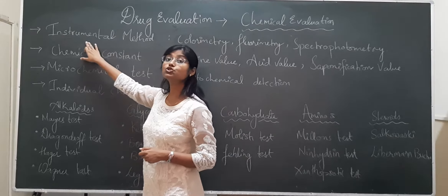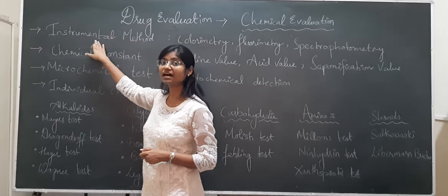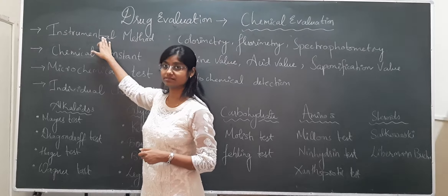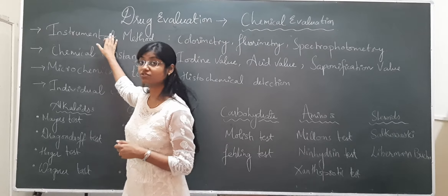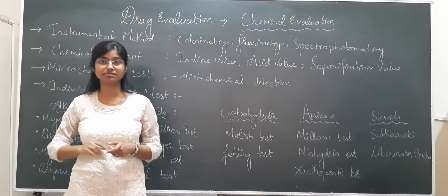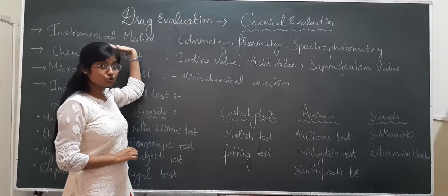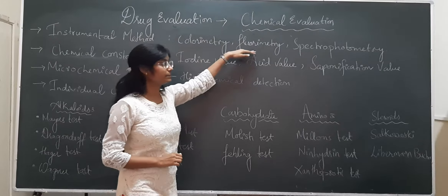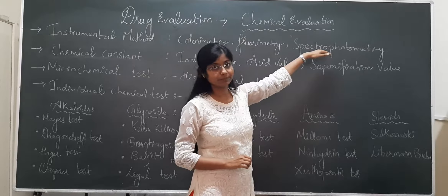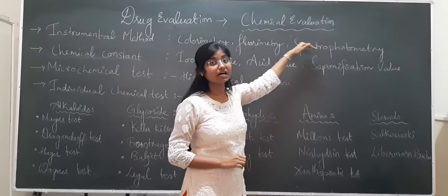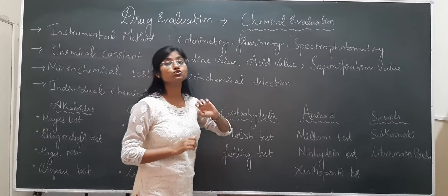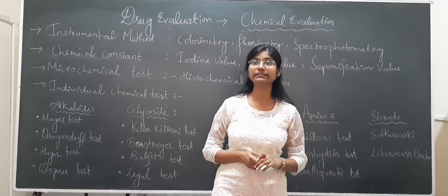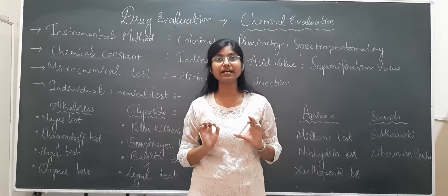The first one is instrumental method. As the name suggests, instruments are being used to check the chemical presence. Instrumental methods include colorimetry, fluorimetry, and spectrophotometry. These are the methods in which instruments are used to check the presence of certain chemicals.